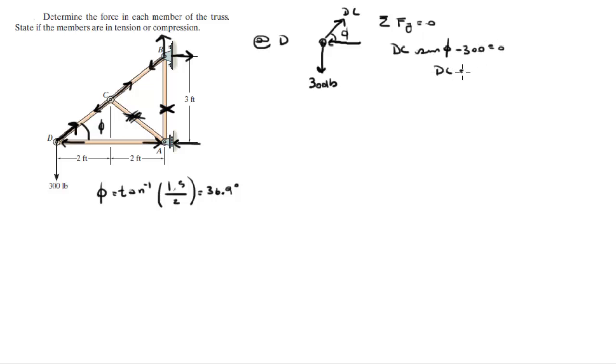So, when you solve for DC, you get that DC is equal to 500 pounds, and as you can see, it's in tension.